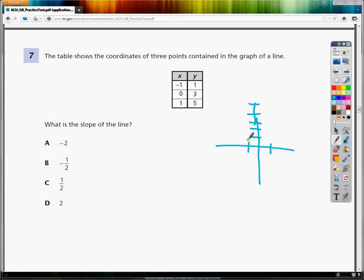So I'm going to do negative one and one, so that would be right here. Then I'm going to do zero and three, so it goes up. And then I'm going to do one and five, so x is one, y is five.